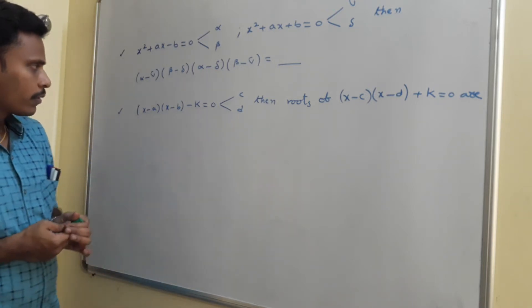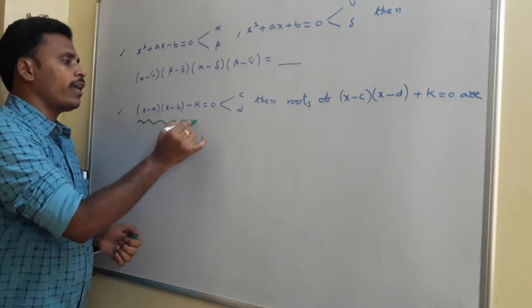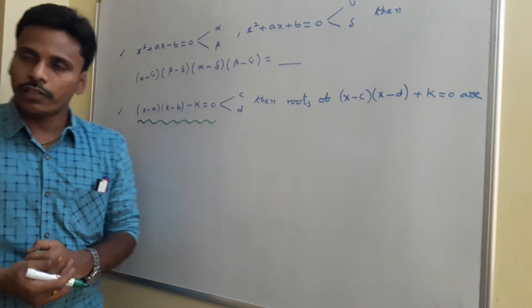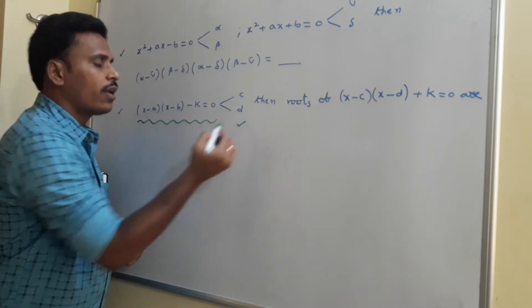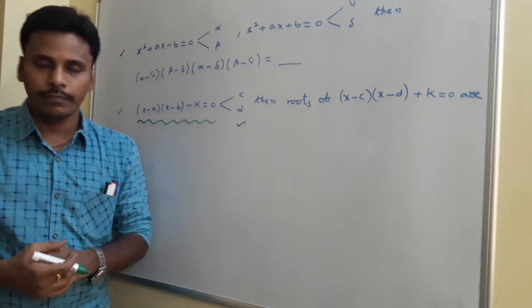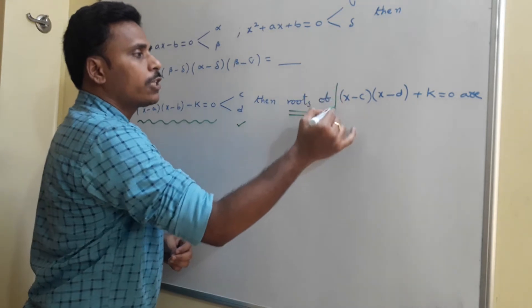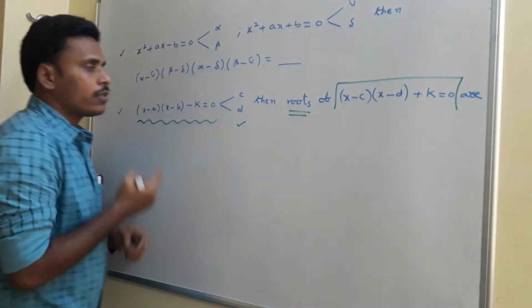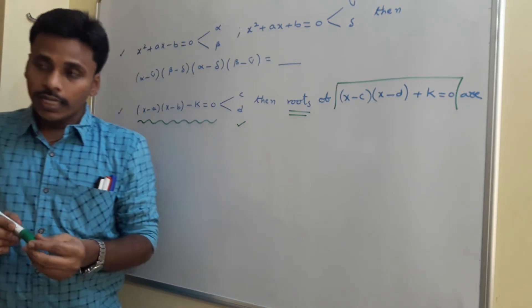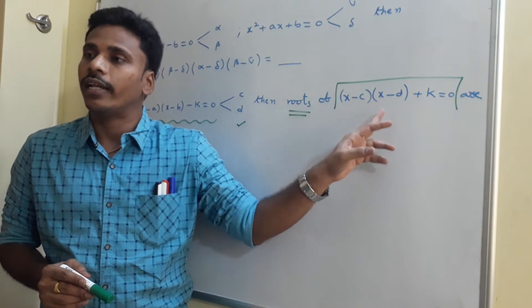The problem states that the equation (x minus a)(x minus b) minus k equals 0 is a quadratic equation whose roots are c and d.